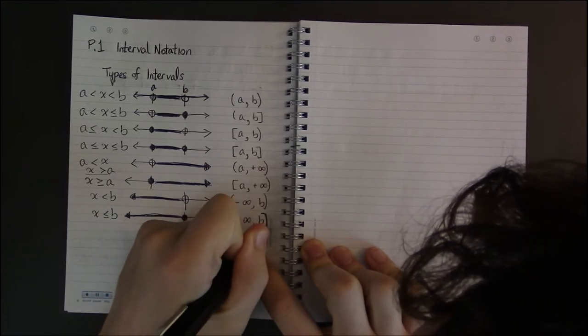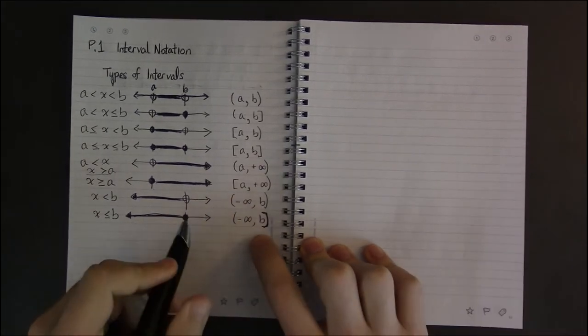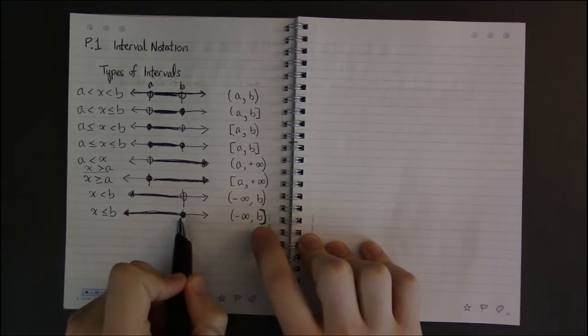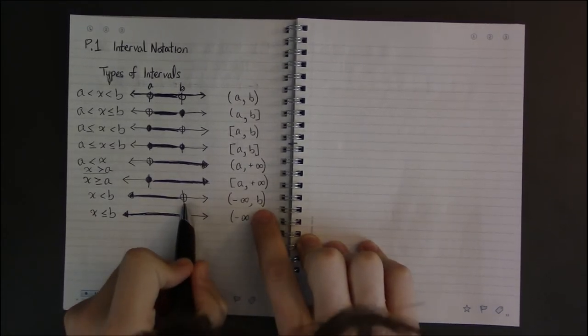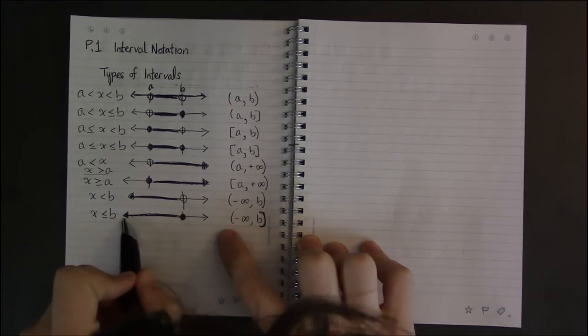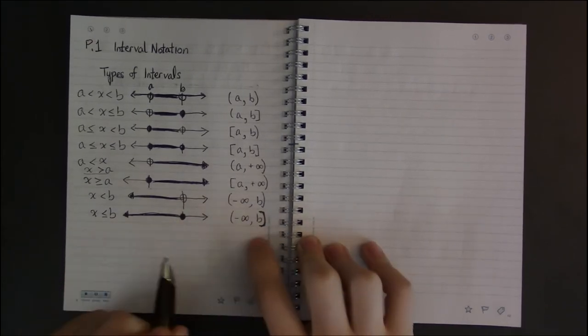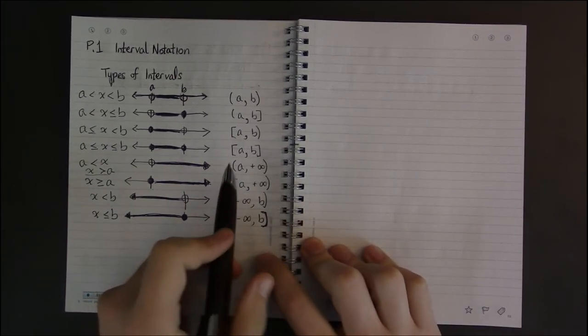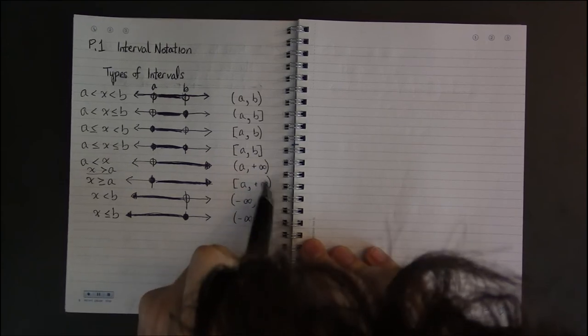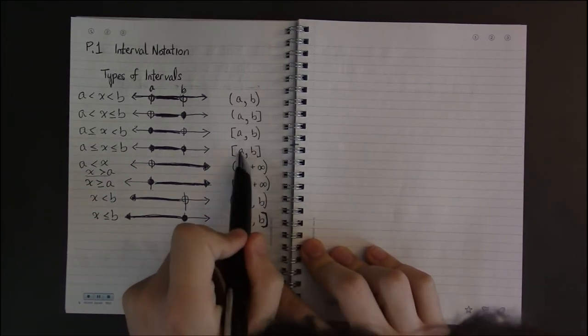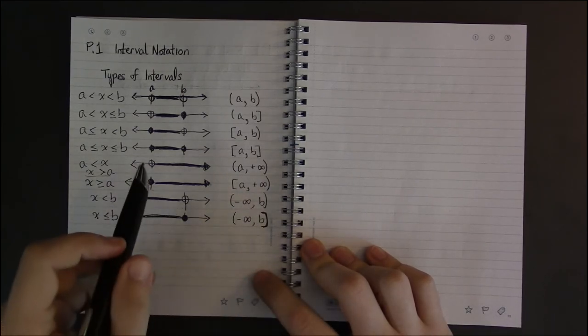And whether we include or exclude b, we take everything below, and with below we use minus infinity. And notice that infinities always get parentheses because you can never actually reach plus or minus infinity.